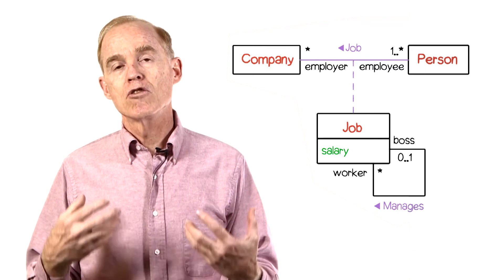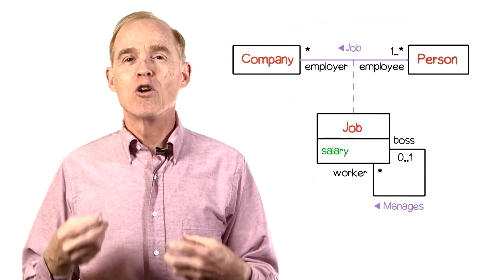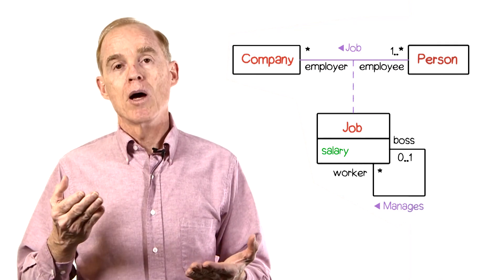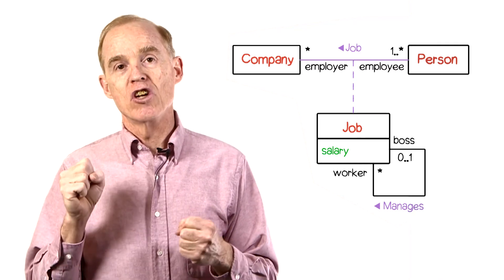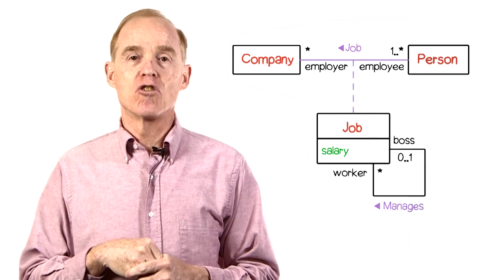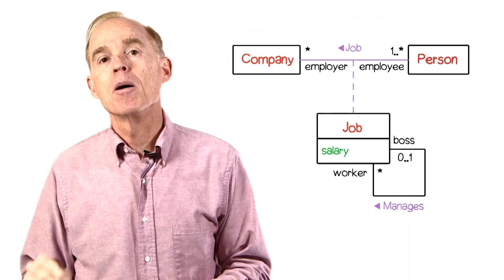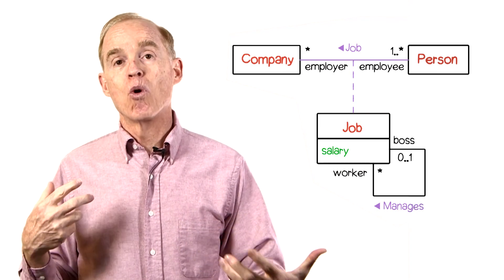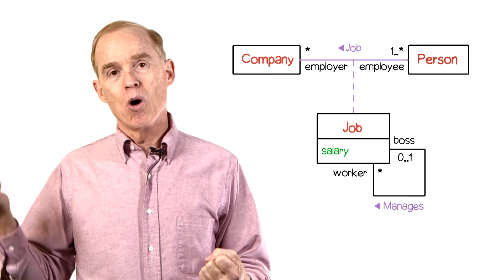For recursive associations in particular, you'd better use role names. In this case, we're talking about the managers association. So one job might manage another job. The department head might manage the staff. And therefore, we want to have roles for the boss, or supervisor, and the worker.